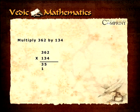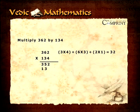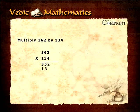The middle step is to add the cross product of all six digits in the following order: 3 multiplied by 4 plus 6 multiplied by 3 plus 2 multiplied by 1 which equals 32. The sum of the cross product of the four right hand most digits gives the next answer digit, that is 6 multiplied by 4 plus 2 multiplied by 3 which equals 30. The final step is the product of the two right hand most digits, which is 2 multiplied by 4 equals 8. After adding up the carry digits the answer is found to be 48,508.